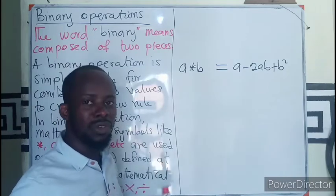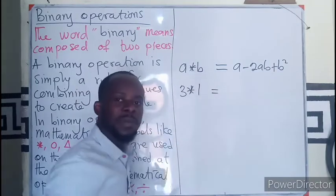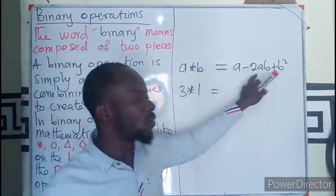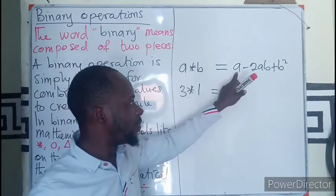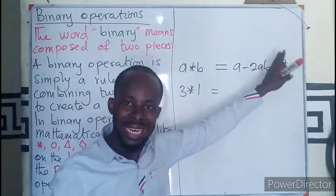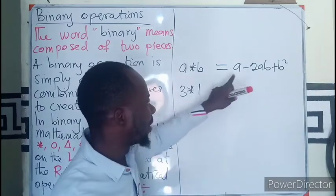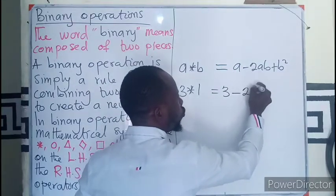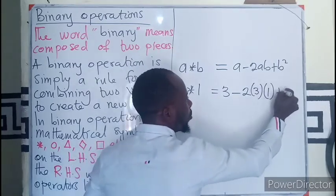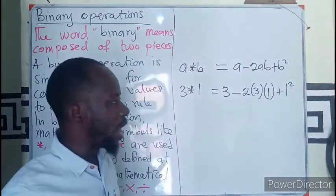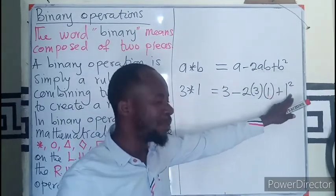If we change the positions of a and b with real numbers, for example 3★1, then a is replaced by 3 and b is replaced by 1. Everywhere we see a and b in the right-hand equation, we substitute those values. So a becomes 3, giving us 3 minus 2 times 3 times 1, plus 1 squared.